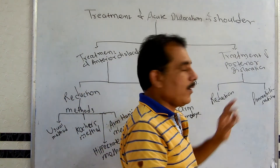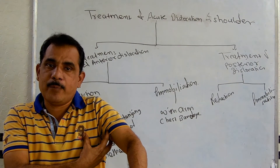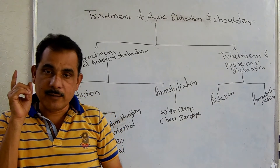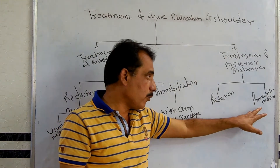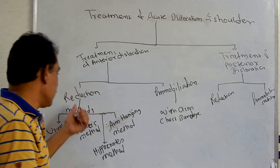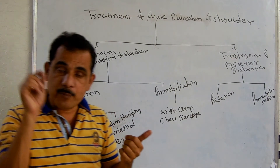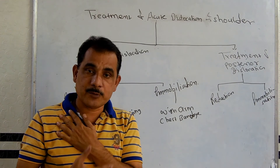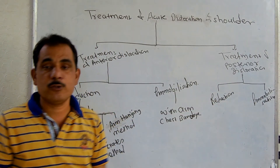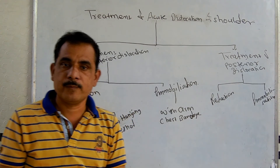Along with the lateral rotation and abduction, the surgeon places the head of the humerus forward using the thumb of the other hand. For immobilization of posterior dislocation, the shoulder is immobilized in the abduction position using a spica plaster. This is different from anterior dislocation, where the arm-chest bandage is used in adduction. Immobilization continues for at least three to four weeks.